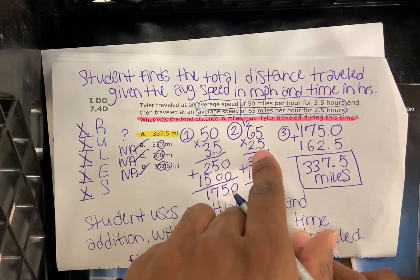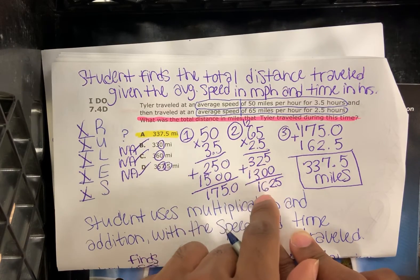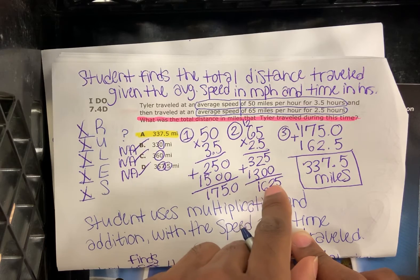Step 2: 65 multiplied by 2.5, that gives us 162.5.